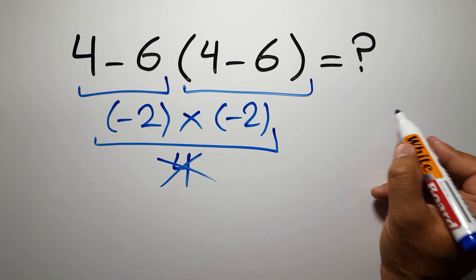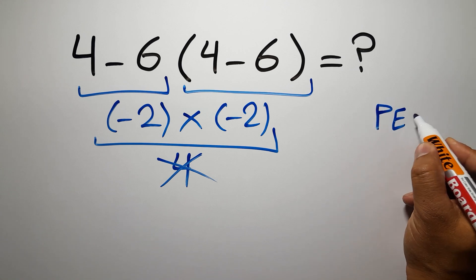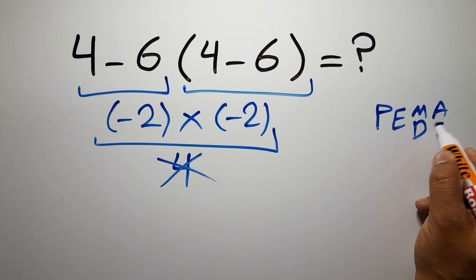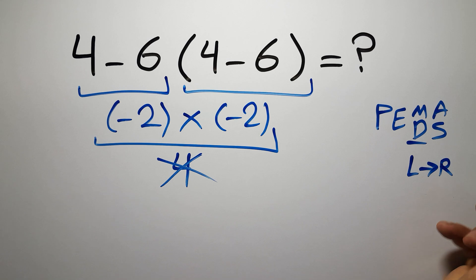Because according to the order of operations, first we have to do parenthesis, then exponents, then multiplication or division, and finally addition or subtraction. Remember that multiplication and division have equal priority, and we have to work from left to right, and the same applies to addition and subtraction.